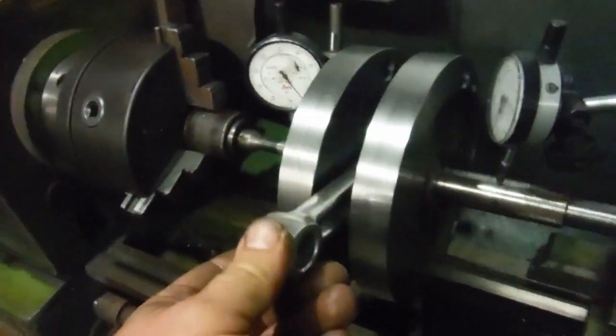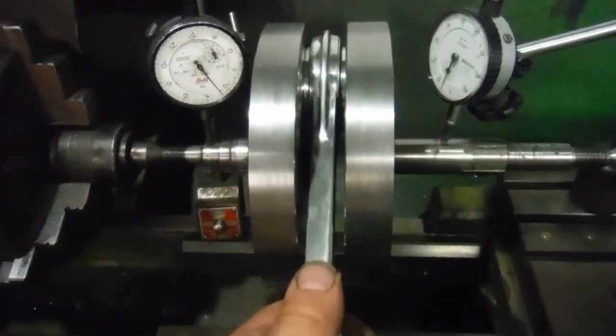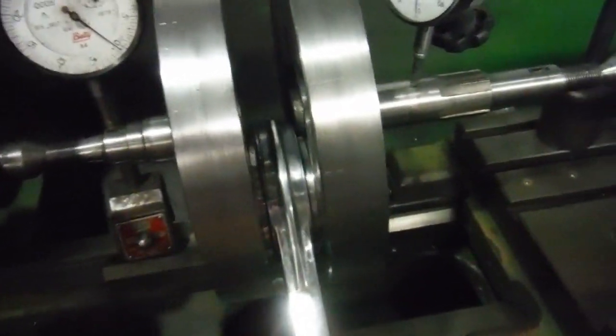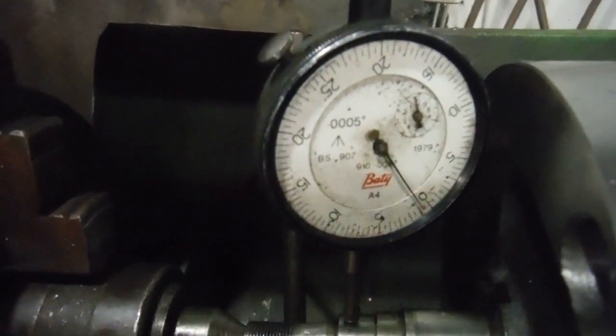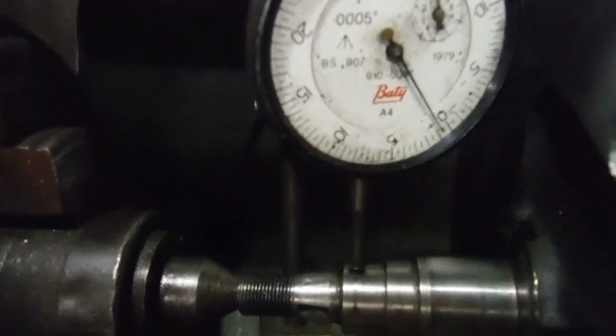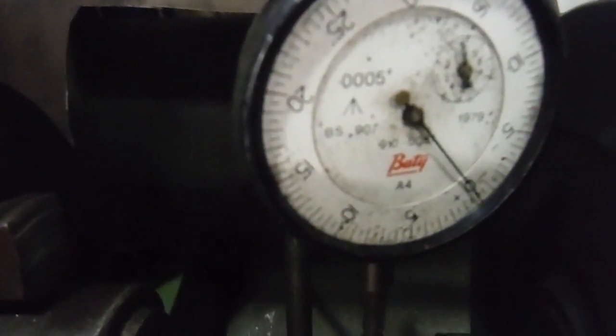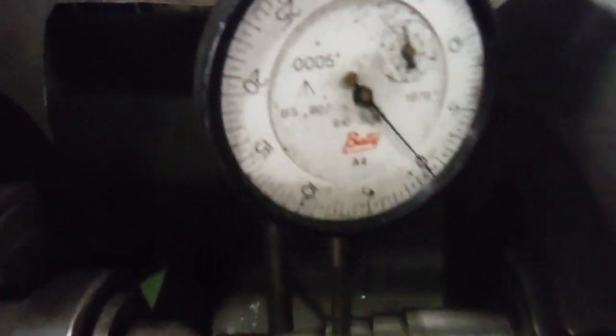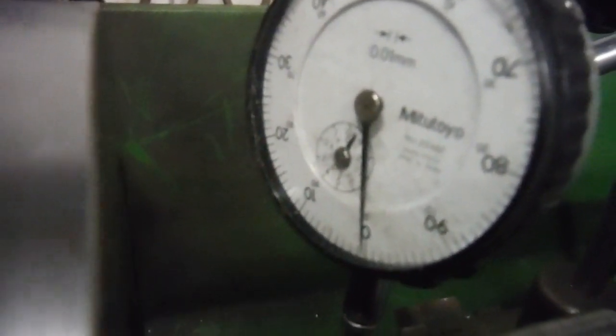Checking the run-out, this clock as usual is in thousandths of an inch and from the nought to the five would be five thousandths of an inch. The clock on my right is a metric one, and going from the nought to the ten on the face of the clock would be 0.1 of a millimeter or four thousandths of an inch.